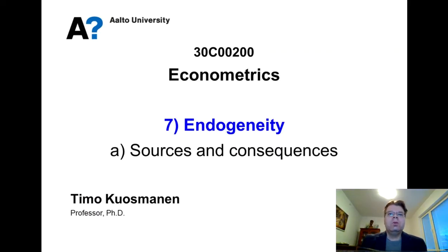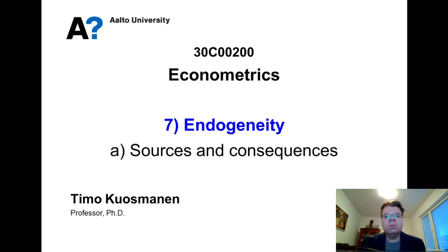We are halfway through the econometrics course. So far we have examined how the classic ordinary least squares estimator functions and what kind of assumptions are needed so that it will be unbiased and consistent. In the next few lessons we will focus on what happens when the assumptions are violated and what remedies exist. We start from the so-called endogeneity problem, and I'll first illustrate why this endogeneity problem is often the main concern for the econometrician.